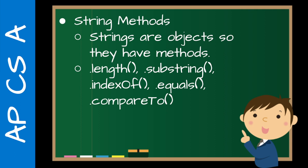String methods — strings are objects, so they have methods. This is one thing that sets primitives apart from objects. We'll talk about the Integer class and autoboxing later, but for now: it's an object, just like human beings have things they can do. The AP-focused subset of string methods is: length, substring, indexOf, equals, and compareTo.